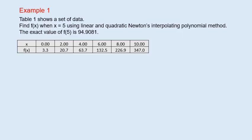In example 1, we are requested to determine f(x) when x is equal to 5 using linear and quadratic Newton's interpolating polynomial method. The exact value is given as 94.9081.